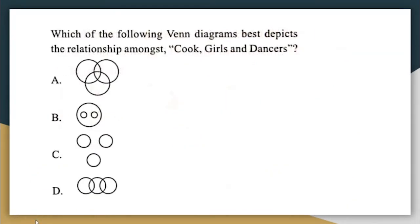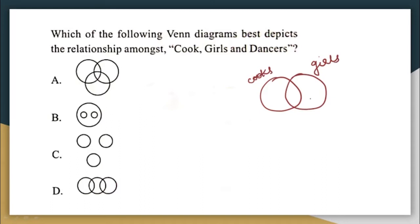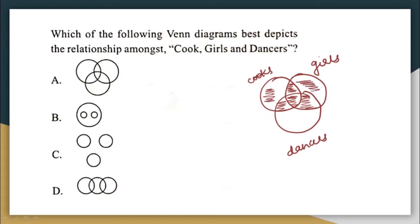Which of the following Venn diagrams best depicts the relationship amongst cook, girls and dancers? There can be cooks who are girls. There can be dancers who are girls, and there can also be dancers who are cooks and girls. This is the best diagram that will represent the relationship. There can be cooks who are dancers only, cooks who are girls but not dancers, girls who are dancers but not cooks, cooks who are girls and dancers, cooks who are not girls or dancers, girls who are not cooks or dancers, and dancers who are not cooks or girls. This is the correct Venn diagram.